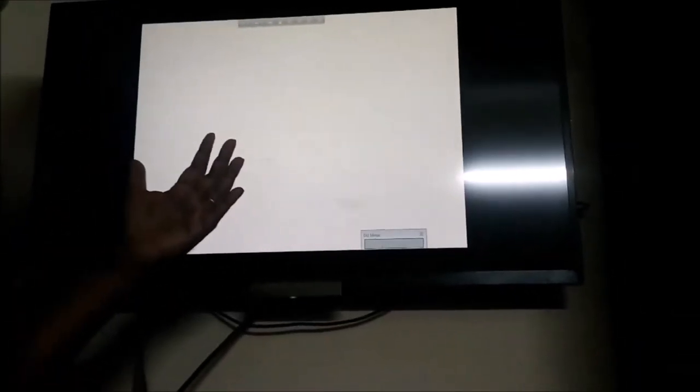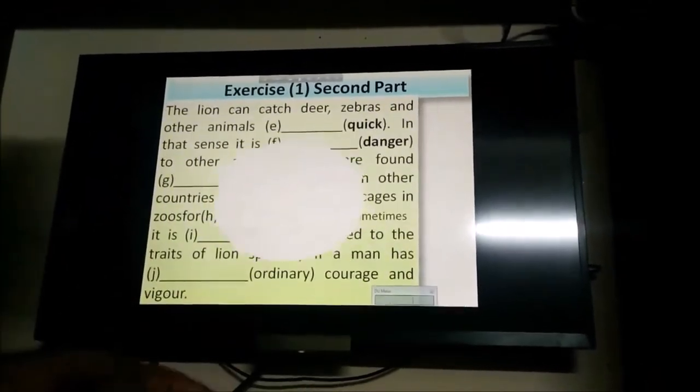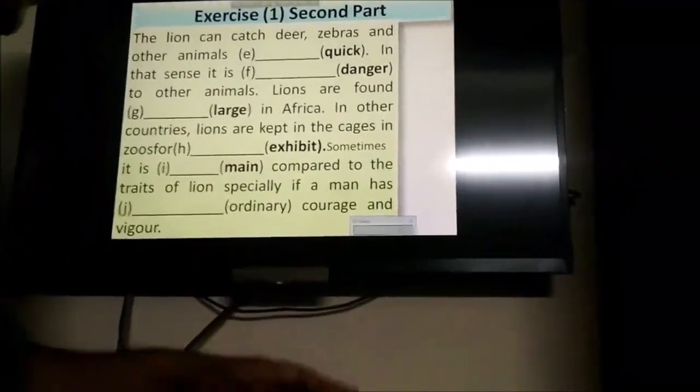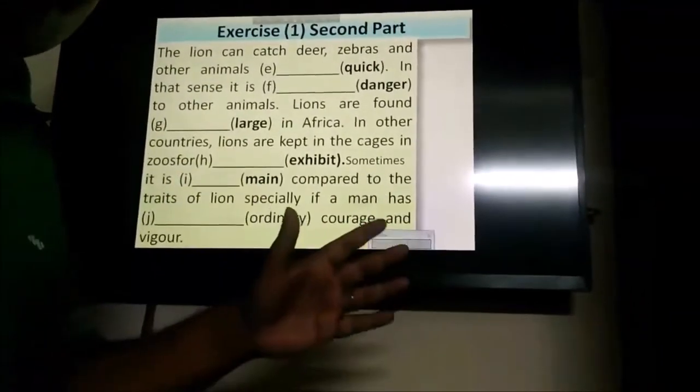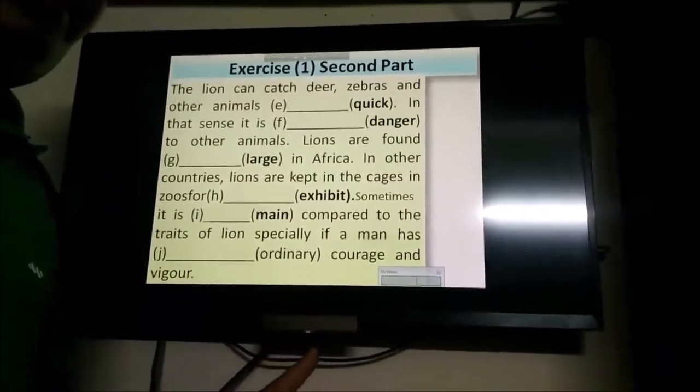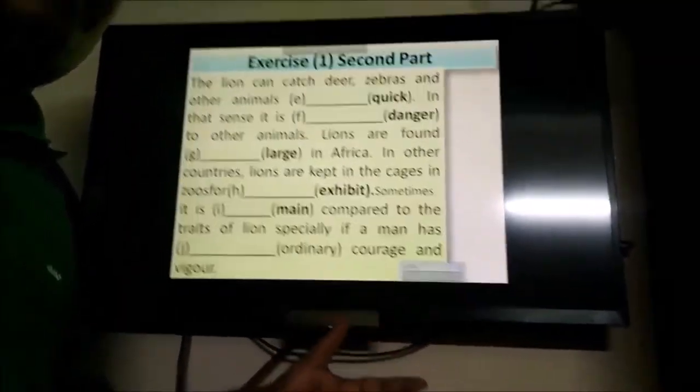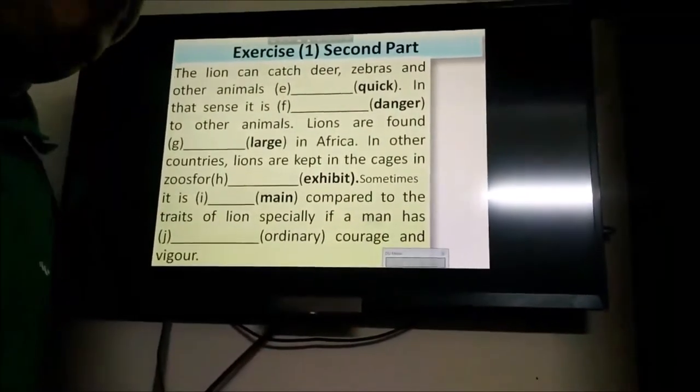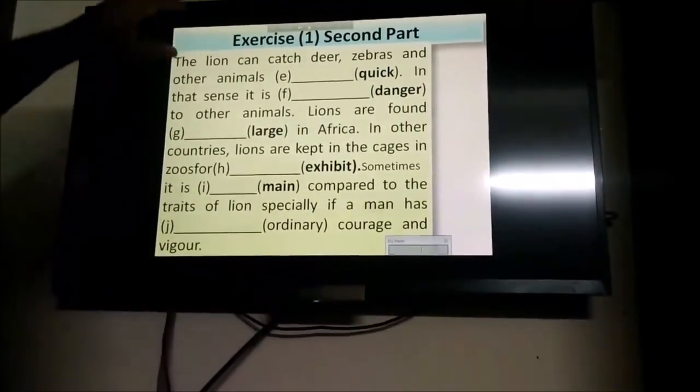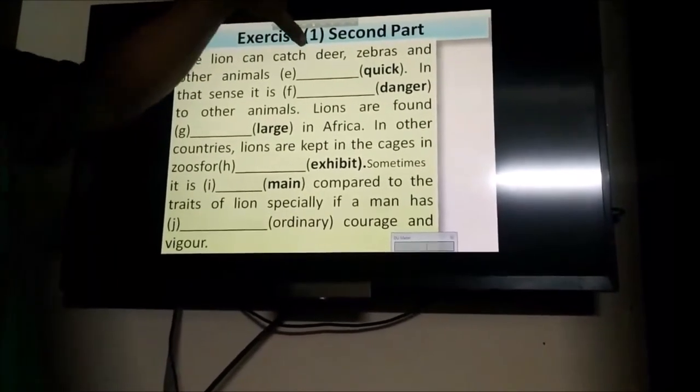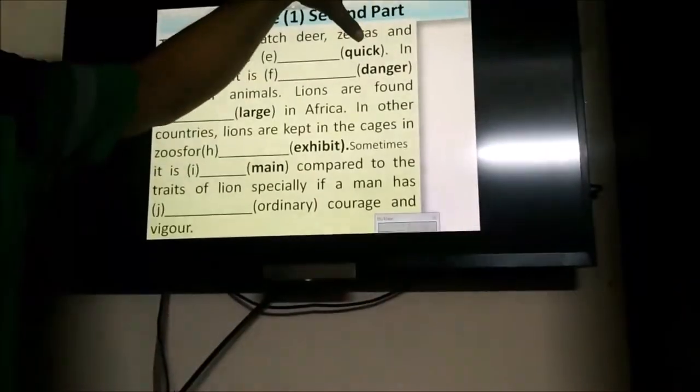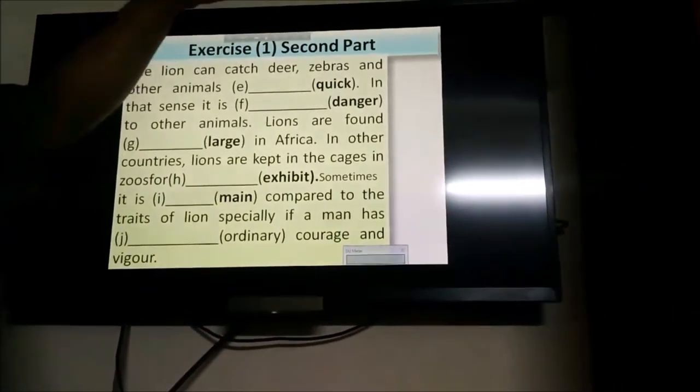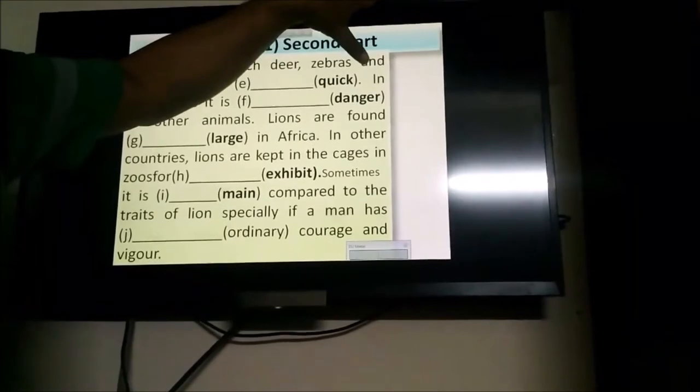Let's see the second slide of the second part of the exercise. As exactly you have to do, you have to pick up the questions first. Try to do it by yourself. I think your answer will be correct if you give a good effort. Let's check it out. A lion can catch deer, zebras and other animals quick. Quick is an adjective given here.